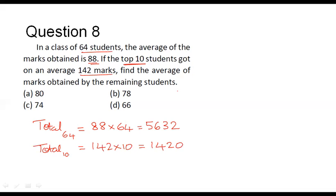From this I can now find out what is the total marks scored by the remaining 54 students. From 64 we have to subtract 10 and that gives you 54. Let us now find out what is the total marks scored by these 54 students.